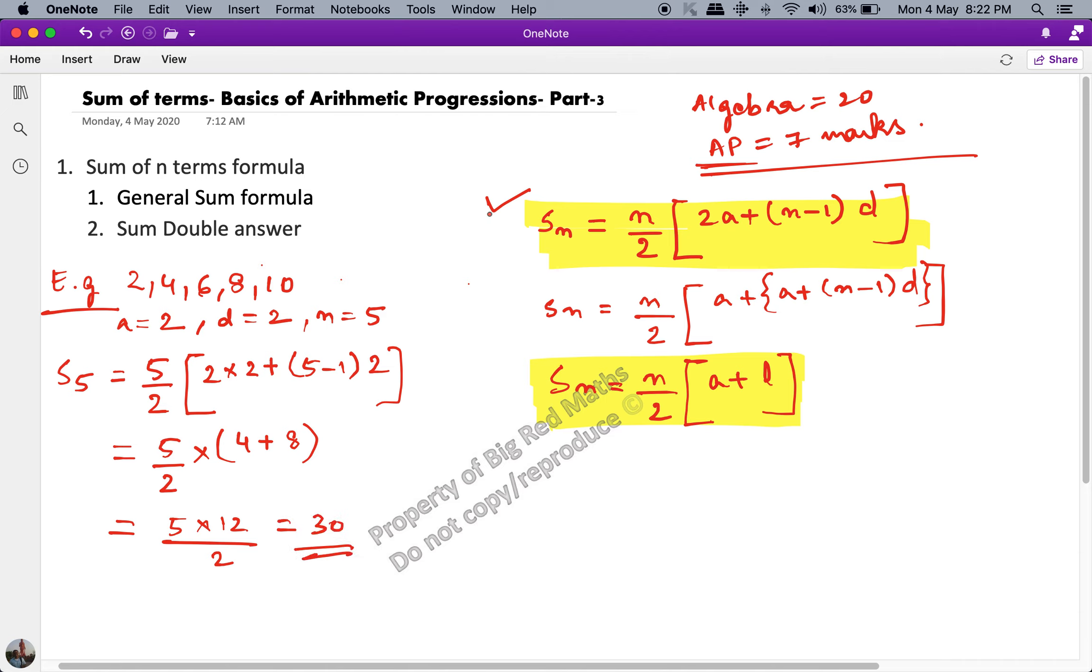So using this formula we got the value of sum of the first 5 terms of the AP at 30. Now let's verify this 30 by simply adding up the terms. There are only 5 terms, so 2 plus 4 is 6, 6 plus 6 is 12, 12 plus 8 is 20, and 20 plus 10 is 30. So the formula works.